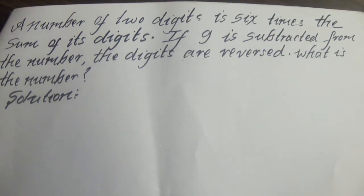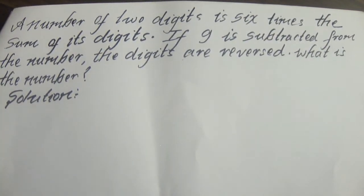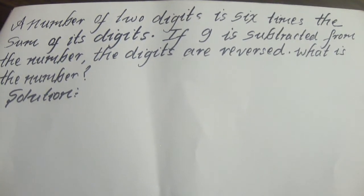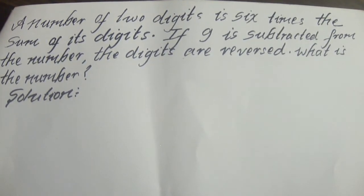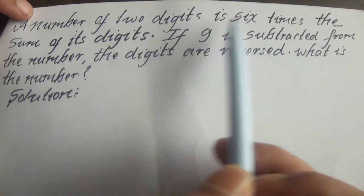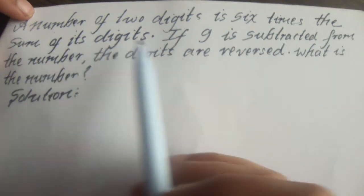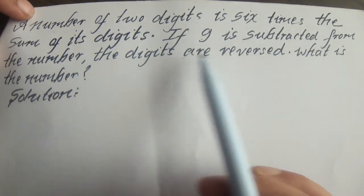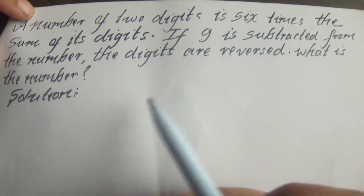A number of two digits is six times the sum of its digits. If nine is subtracted from the number, the digits are reversed. What is the number?